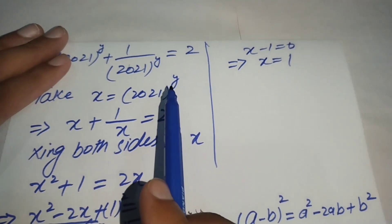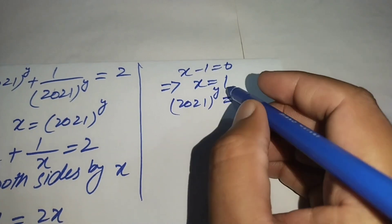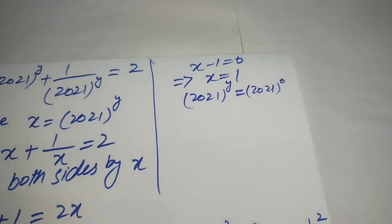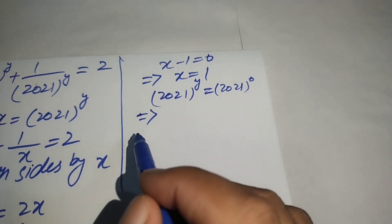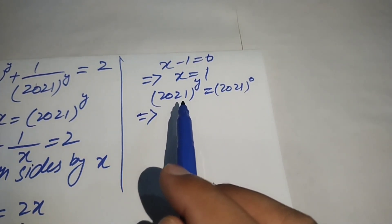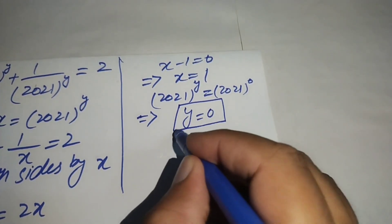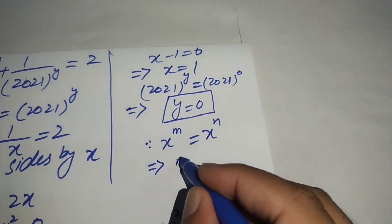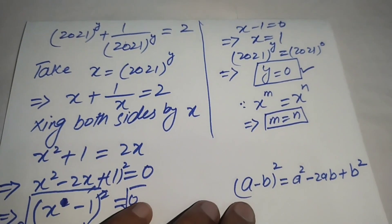Since x = 2021^y, we substitute back and get 2021^y = 1. We write 1 as 2021^0, using the exponent law that anything to the power 0 equals 1. Since the bases are the same, the powers must be equal, so y = 0. This is our final answer.